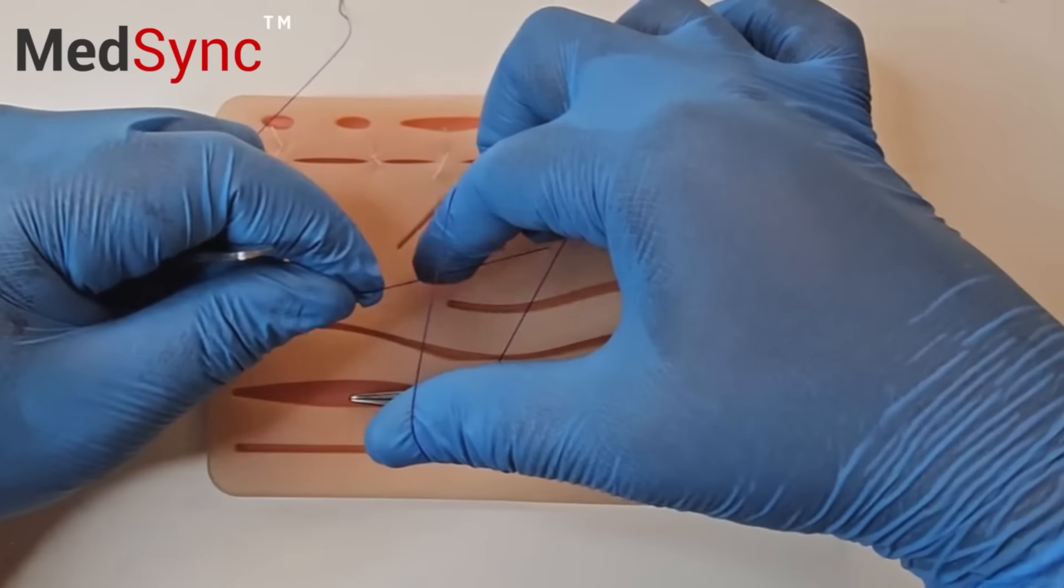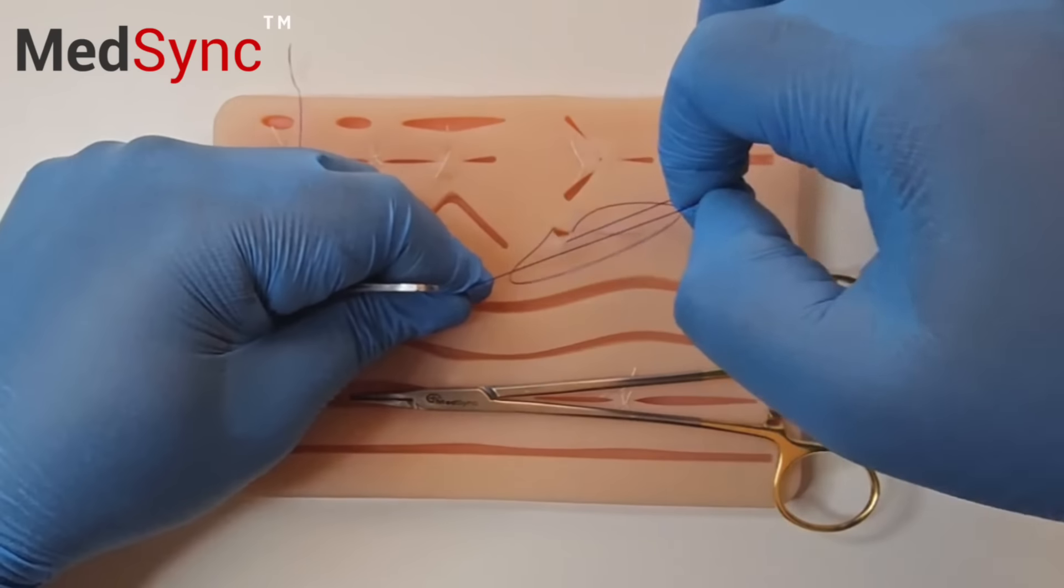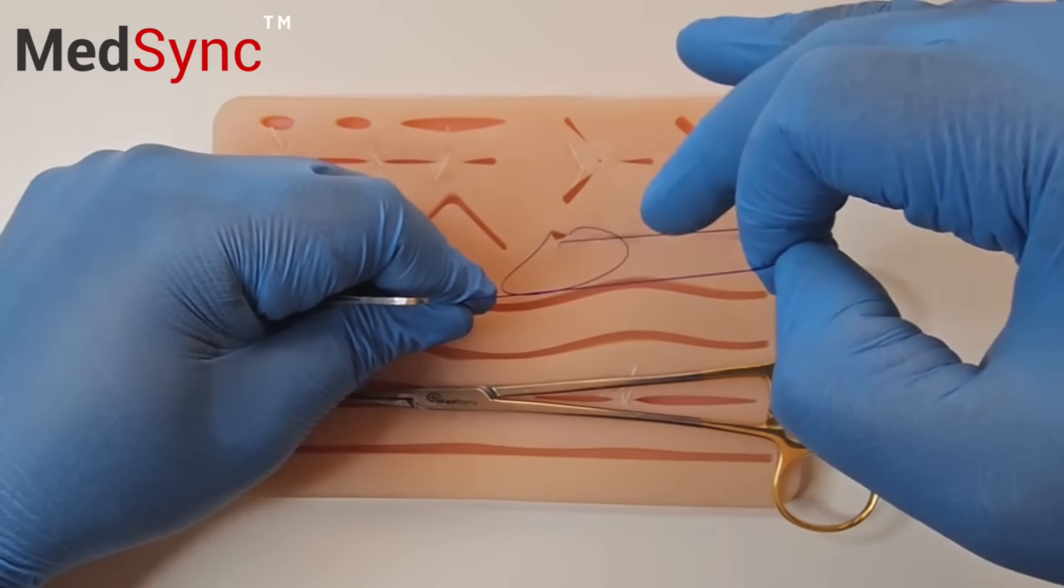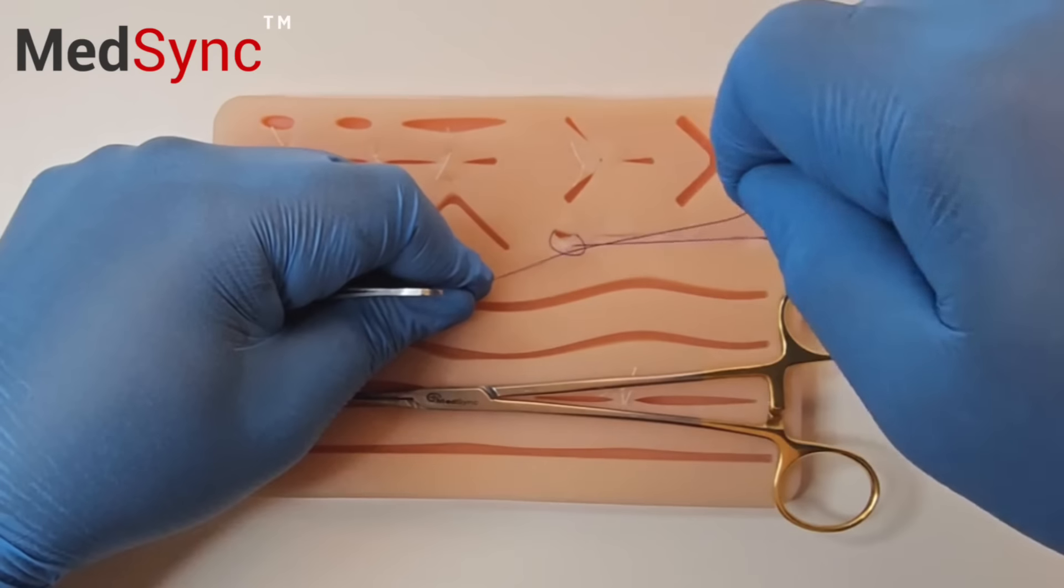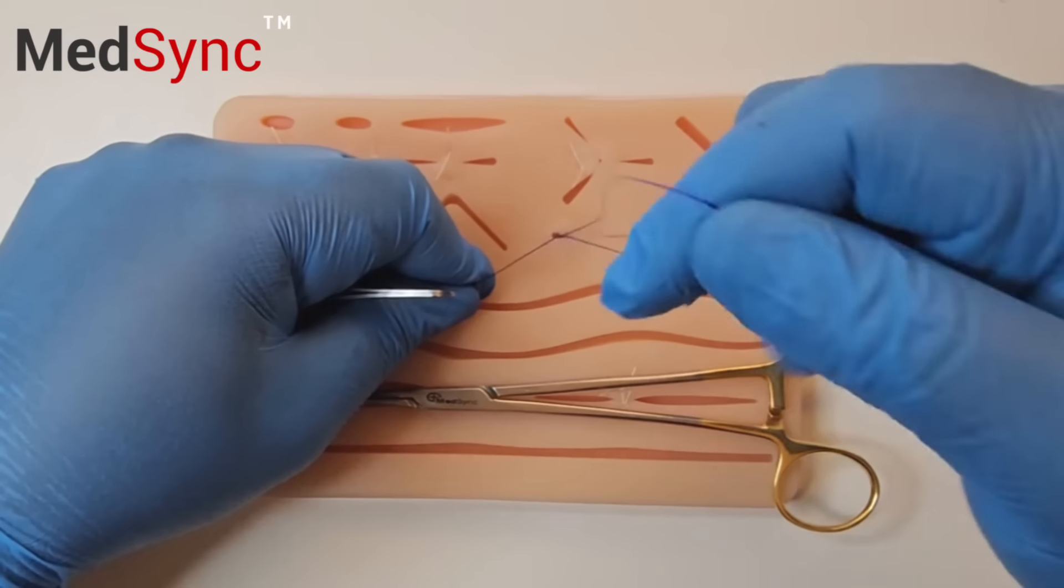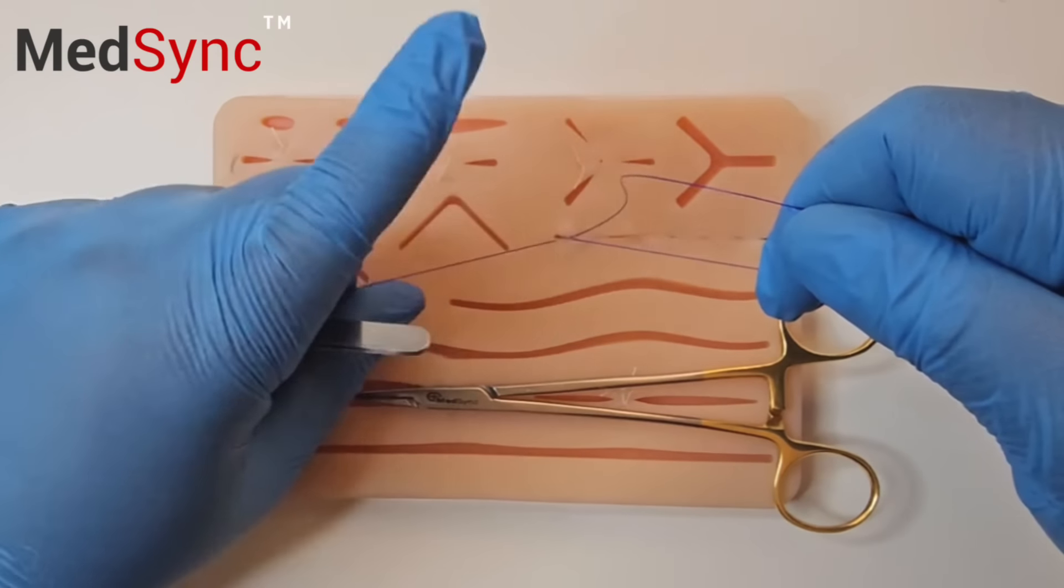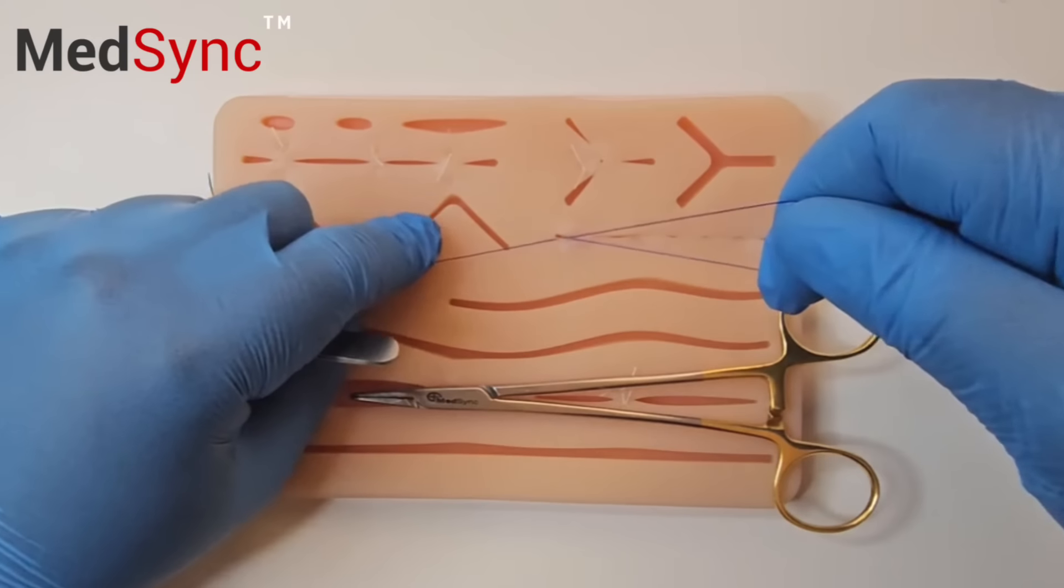Sweep the long suture through the loop. You pull the under thread until the knot slides down into the wound. Do not let the needle come through the loop just yet.